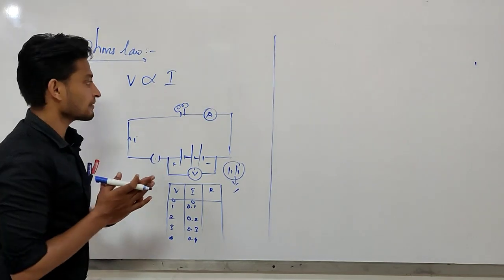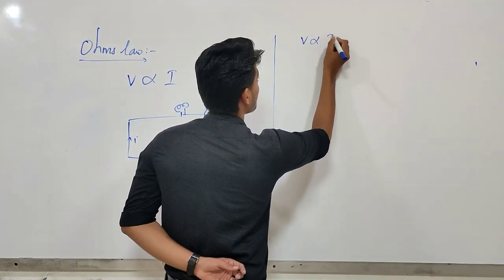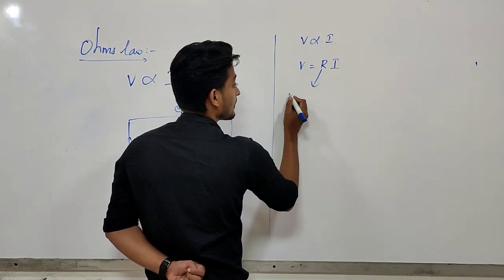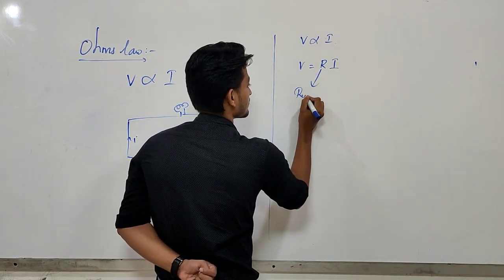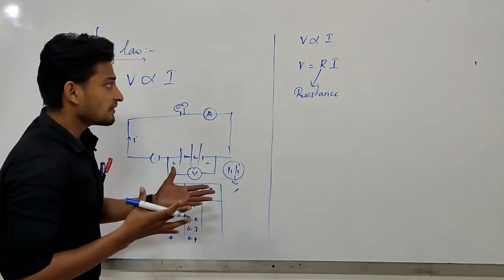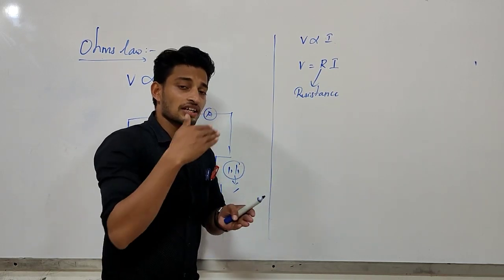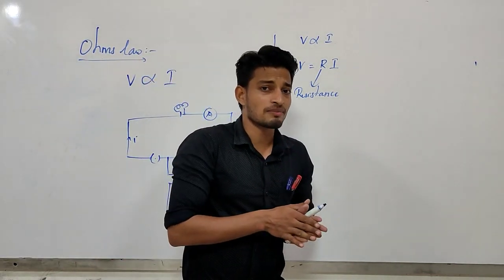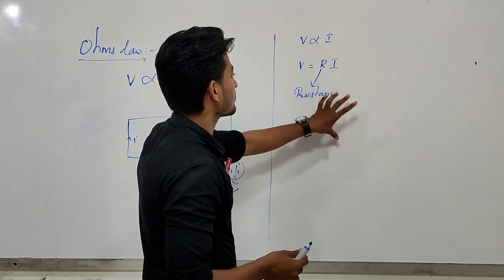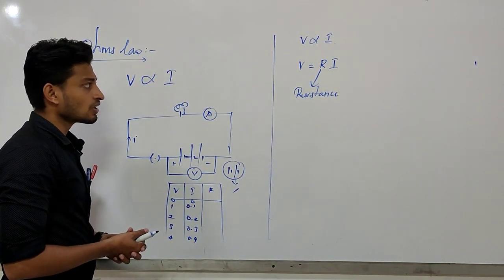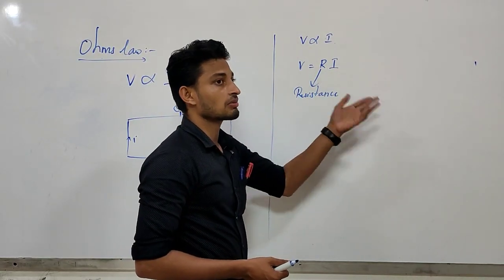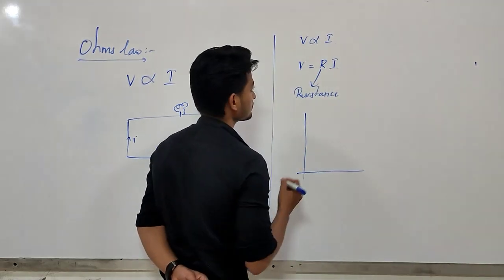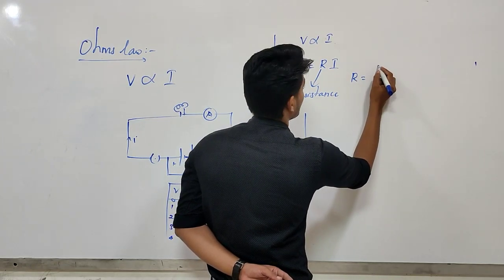The potential difference V is directly proportional to current passing through the conductor. So, potential difference V equals R times I. This R is called the proportionality constant — resistance. Resistance opposes the flow of electrons. We can write R equals V divided by I. Now, let's verify using a graph. This graph is very important.